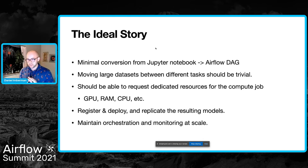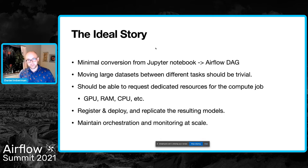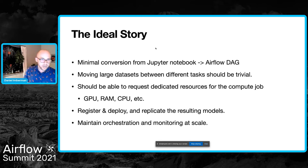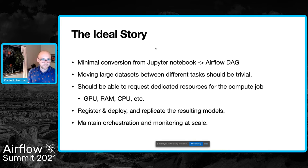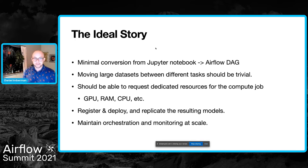You just want to change as few lines and as few architectures as possible and be ready to go. We want the ability to move large data sets between tasks — this should be trivially easy, practically magic. You should be able to return a data frame from one task, take in a data frame in the next task, and as far as you know, it works just like running Python functions. You should be able to request dedicated resources for the compute job — things like GPU, RAM, and CPU. It should also have the meta necessities for model management: registering a model, deploying it, and replicating the results so you can easily deploy your model, run canary testing against multiple models, and then pick the best one. By the time your Airflow DAG is done, you have a running model endpoint that your users can reach.